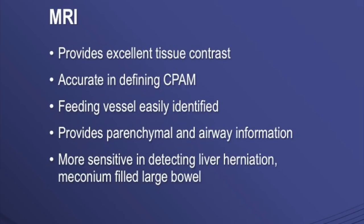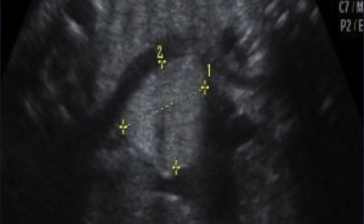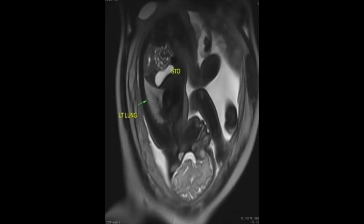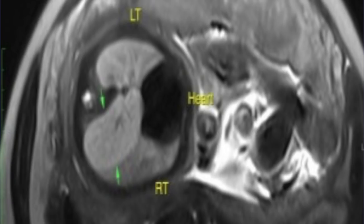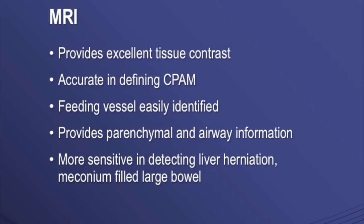What about MRI? Should MRI be advised? MRI will provide excellent tissue contrast and will be very accurate in defining CPAM because a feeding vessel and the bronchial tree are more easily identified. So CPAM, pulmonary sequestration, and even a rarer case of diaphragmatic hernia that you might be thinking is an echogenic lung — all these things will be seen better on MRI.